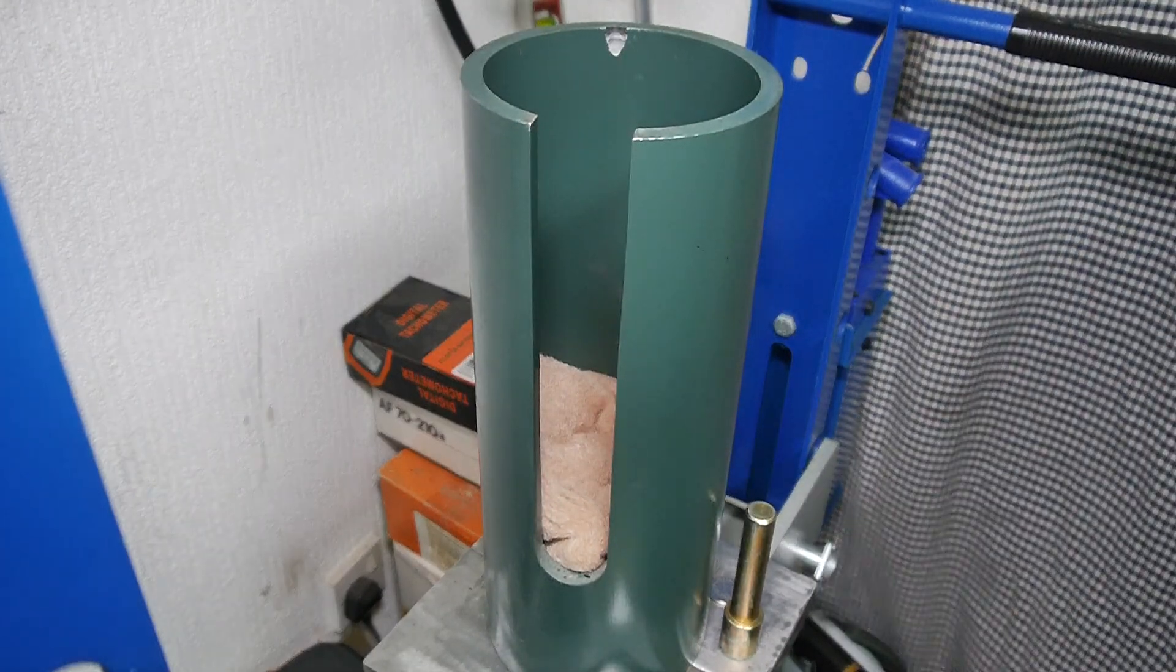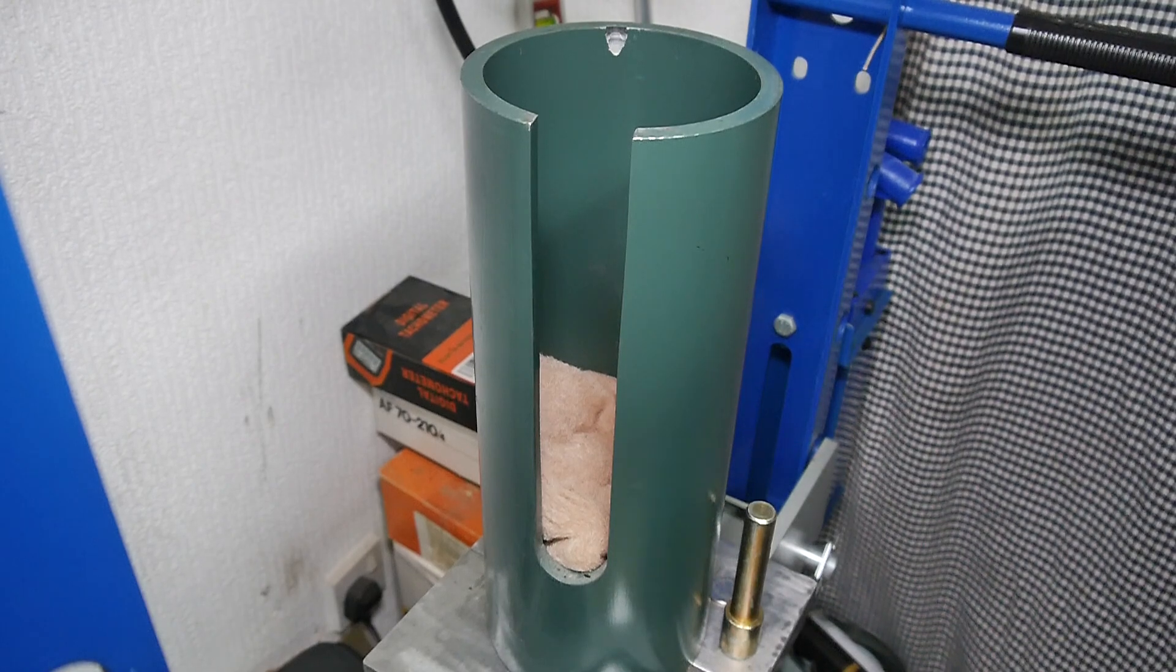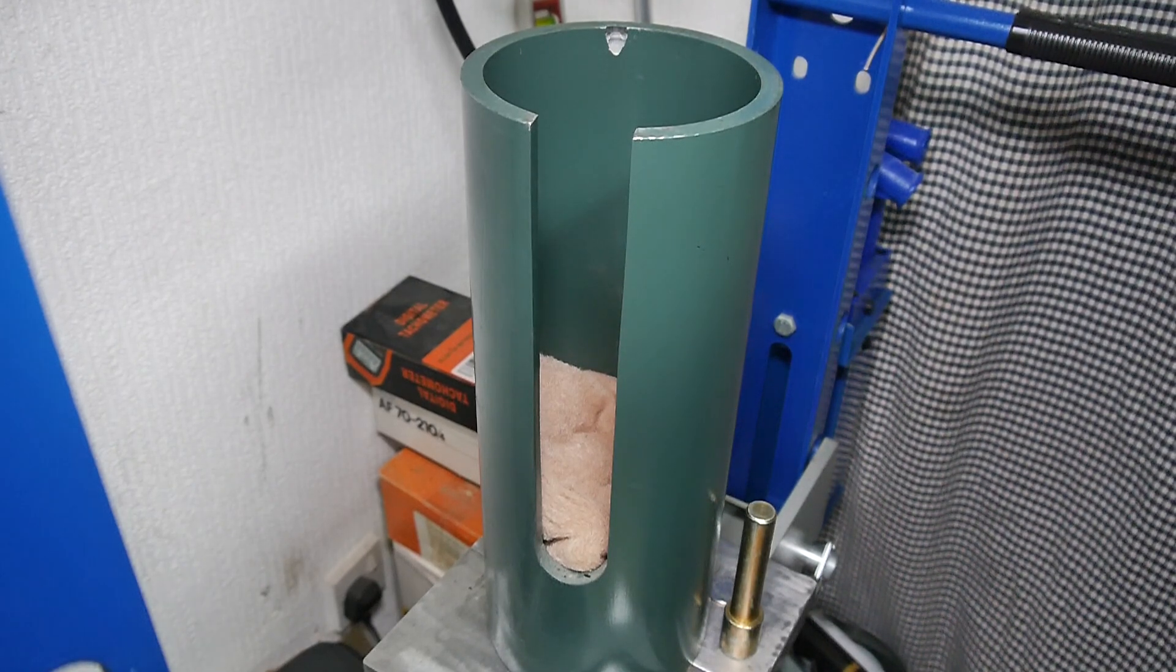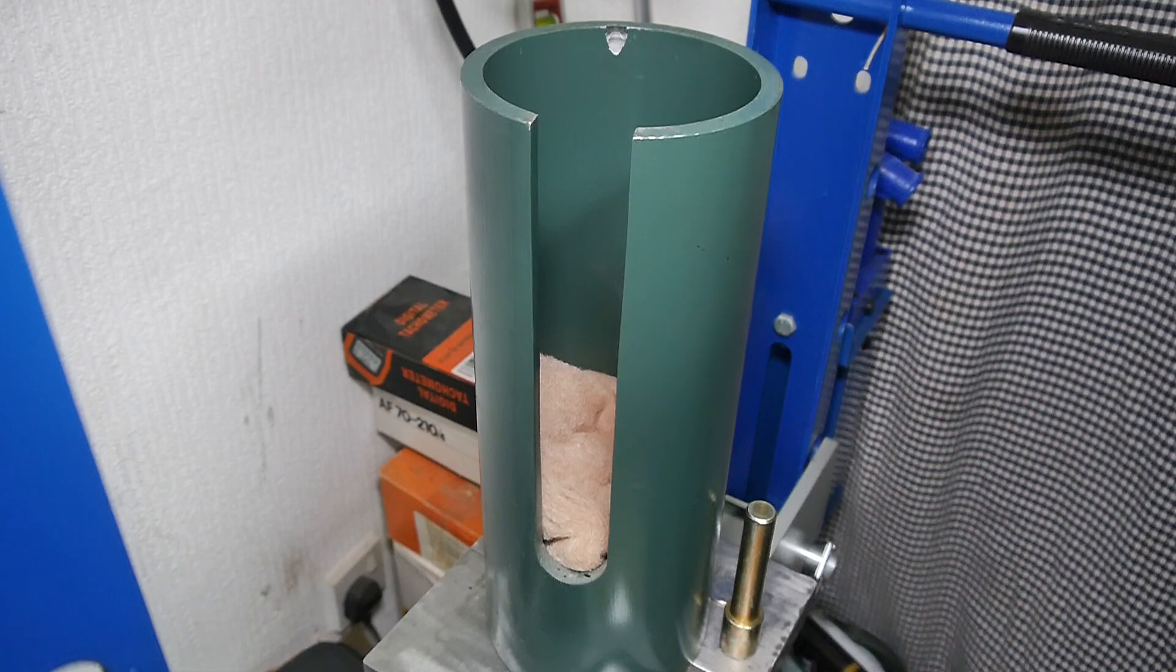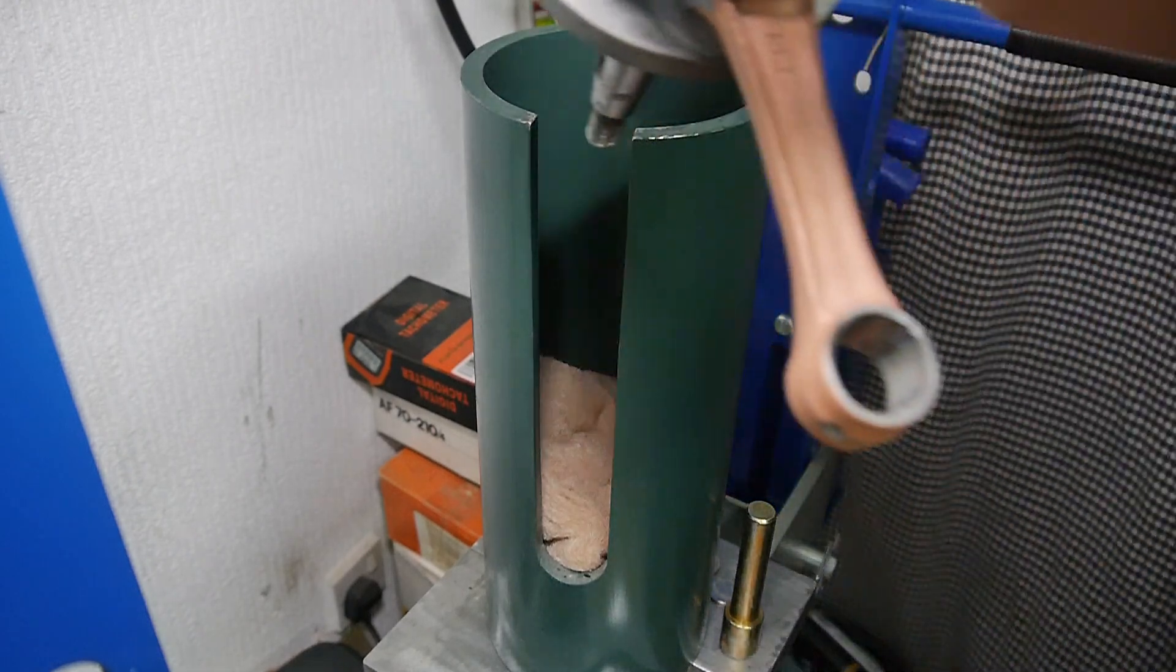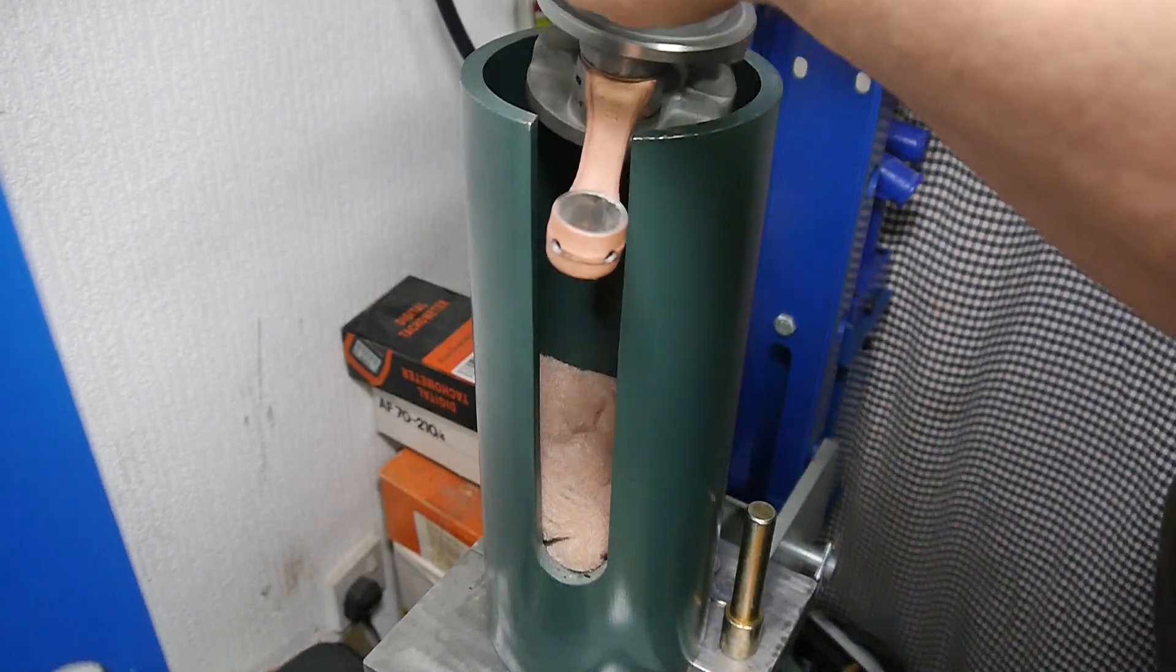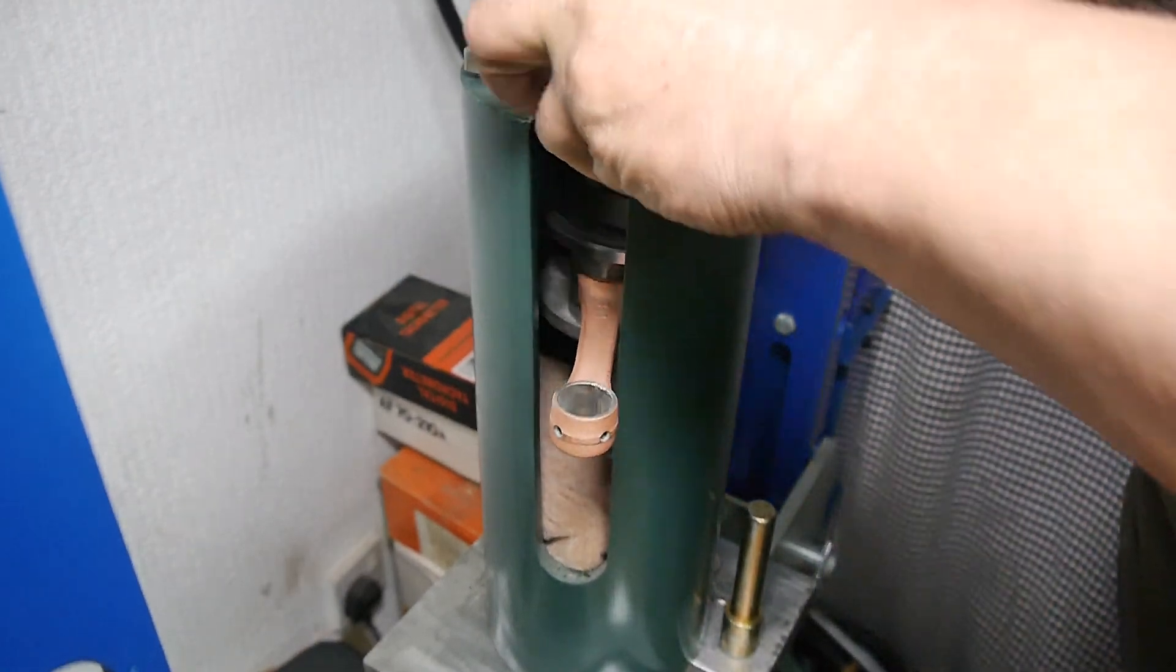So we'll start off and put the crankshaft in, and we'll take out the outer webs first, both outer webs, and I'll explain why as I go along. So we'll put the pressing tube in.